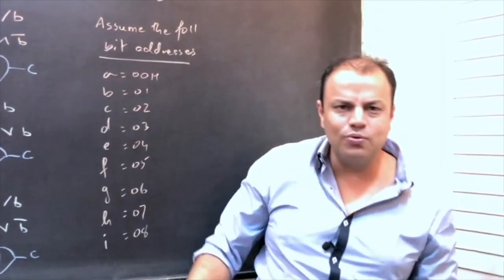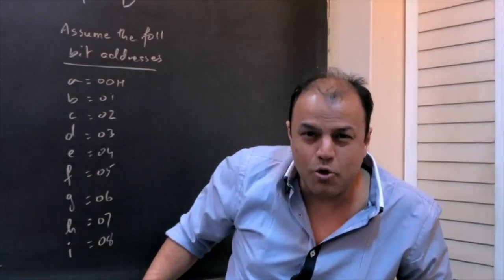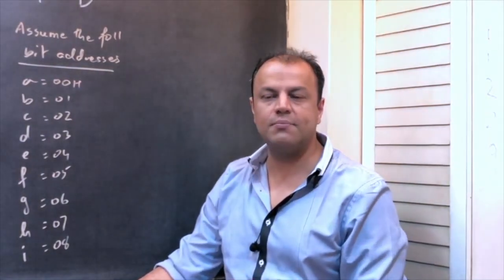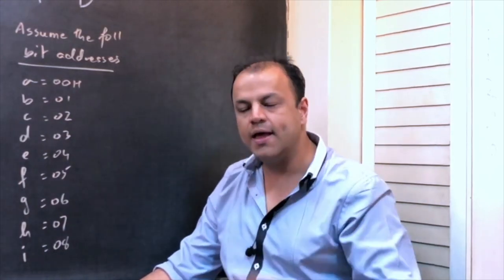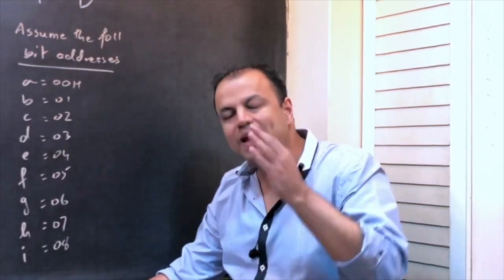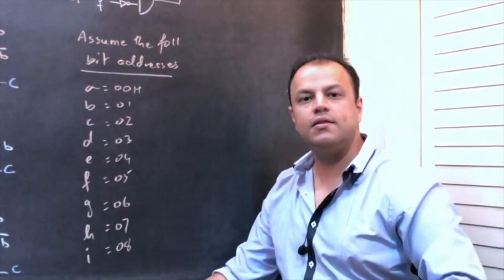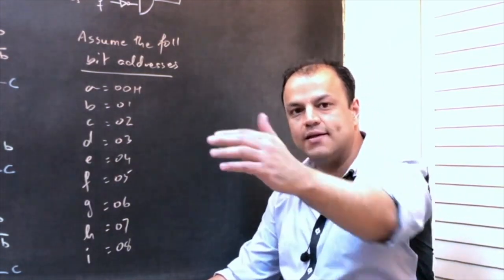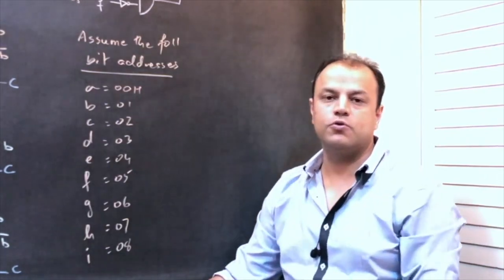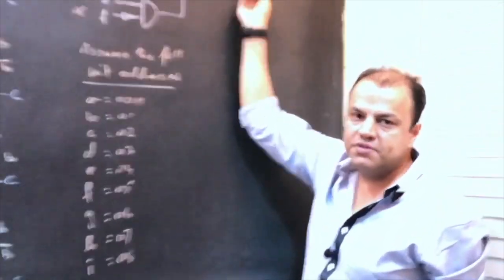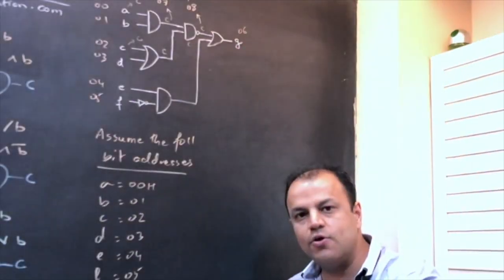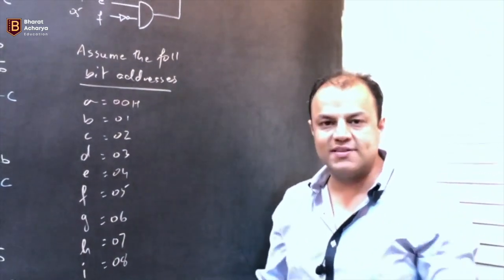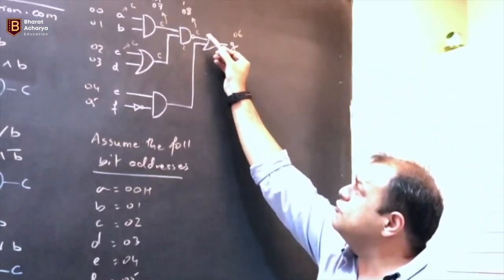Don't try to learn the most optimized code first — that's where people go wrong. First, get yourself to a position where you can write a program for any question given. Once you reach that level, optimization comes naturally with practice. You could have stored everything in G itself; what matters is the final answer in G at the end of the program. Ten people can do it in ten different ways.